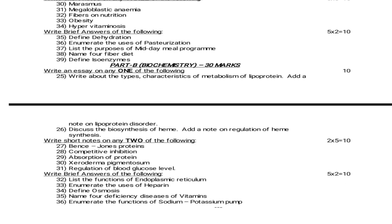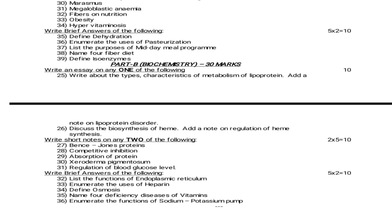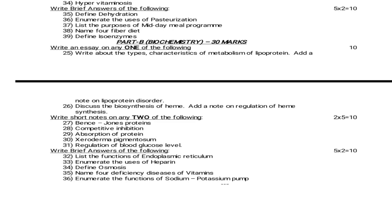Biochemistry for June 2015 — 30 marks. Essay questions — answer any one: Write about the types, characteristics and metabolism of lipoprotein and add a note on lipoprotein disorders. Discuss the biosynthesis of heme and add a note on regulation of heme synthesis. Short notes — 5 marks: Bence Jones protein. Competitive inhibition of enzymes. Absorption of proteins. Xeroderma pigmentosum. Regulation of blood glucose level. Brief answers — 2 marks: List the functions of endoplasmic reticulum. Enumerate the uses of heparin. Define osmosis. Name 4 deficiency diseases of vitamins. Enumerate the functions of sodium-potassium pump.